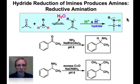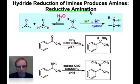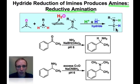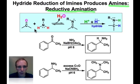Let me show you how we can combine chemistry from previous webcasts into a useful synthetic process known as reductive amination. Reductive amination results in products that are amines, like this one. These more complicated amines are derived themselves from simpler amines together with a carbonyl derivative — an aldehyde or a ketone.